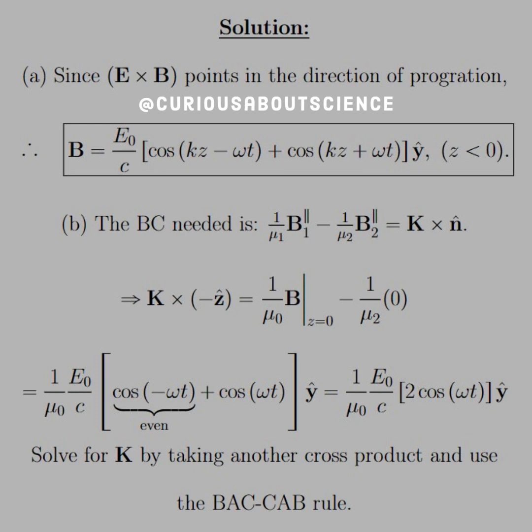The boundary condition needed is 1 over mu1 B1 parallel minus 1 over mu2 B2 parallel is equal to K cross n. So this is the boundary condition. However, what we see here is that the n, or the way of the propagation, is in the negative z-direction since it's less than 0. And here, B2 doesn't do anything, it doesn't transmit, so B2 is 0, and B happens in the vacuum, so it's at mu naught, and we need to evaluate it at z equals 0.